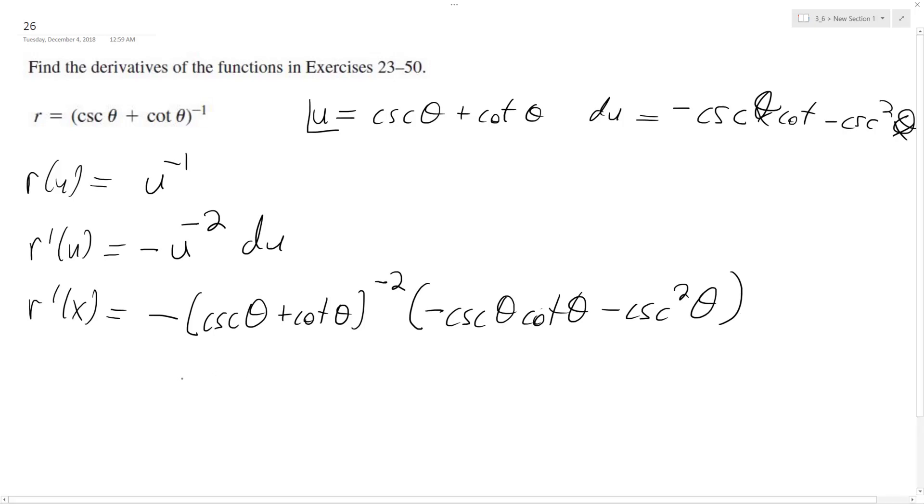Yeah, so what we can do here, out of this here, we can factor out a negative cosecant theta. And what we get is cotangent theta plus cosecant theta, because we factor out just one.